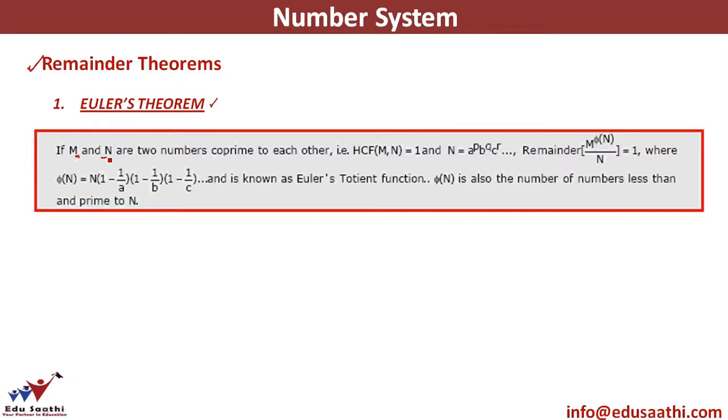If m and n are two numbers co-prime to each other such that HCF of m and n is equal to 1, now what does that mean? You are dividing m with n and you have to find out the remainder. m raised to power something, m raised to power - let me call it x - you have to find out the remainder.